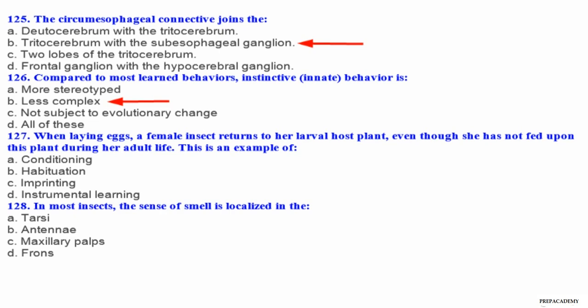Question 127. When laying eggs, a female insect returns to her larval host plant, even though she has not fed upon this plant during her adult life. This is an example of: A conditioning, B habituation, C imprinting, D instrumental learning. Question 128. In most insects, the sense of smell is localized in the: A tarsi, B antennae, C maxillary palpi, D frons.